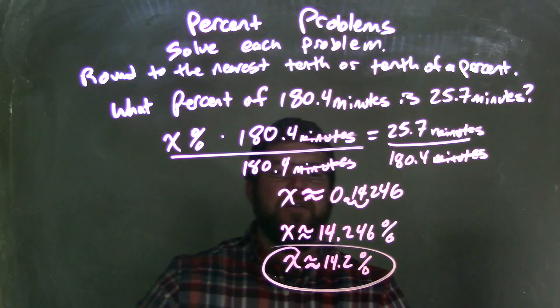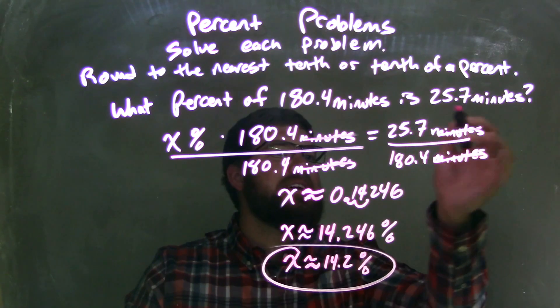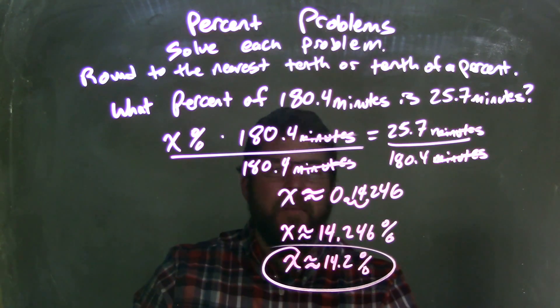So that answers the question. 14.2% of 180.4 minutes is 25.7 minutes.